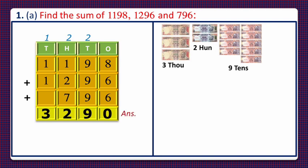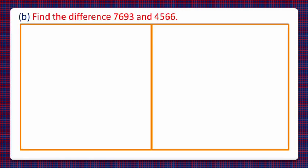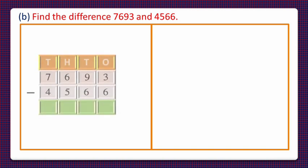So our answer is 3290. Now let's move to question number 1b: find the difference between 7693 and 4566.